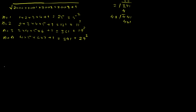Now let us generalize. Our expression 2000 times 2001 times 2002 times 2003 plus 1 can be written as n times (n+1) times (n+2) times (n+3) plus 1, where these are four consecutive integers.